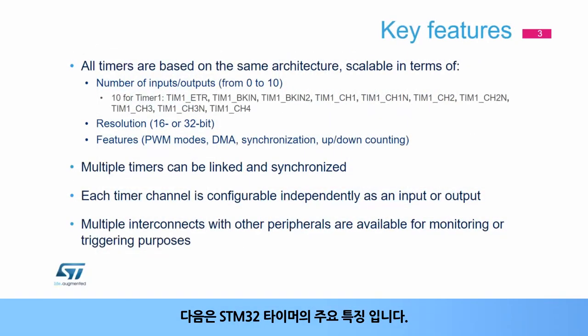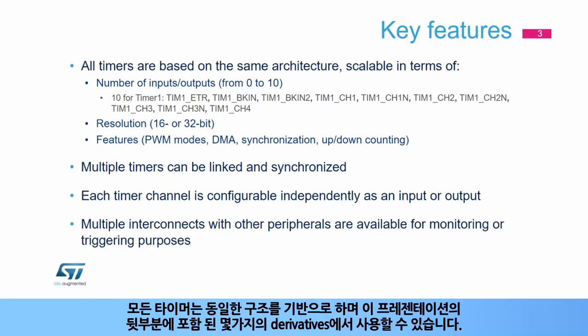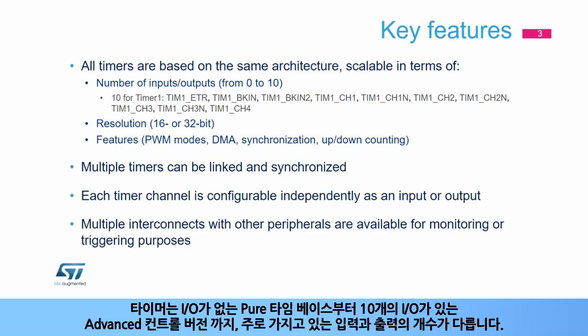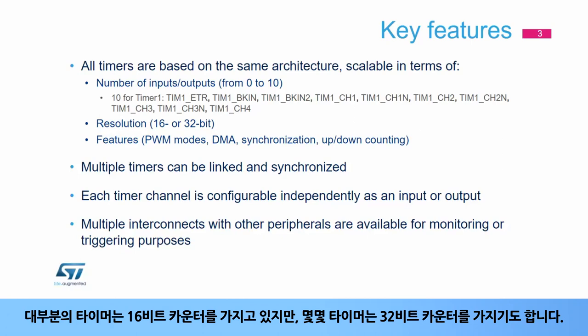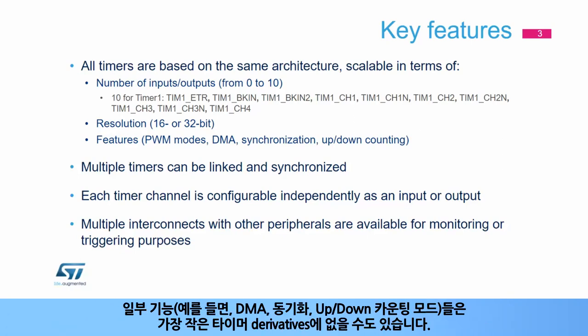Here are the key features of the STM32 timers. All timers are based on the same architecture and are available in several derivatives. The timers mainly differ in the number of inputs and outputs they have, from a pure time base without any IOs to an advanced control version with 10 IOs. Most timers feature 16-bit counters, while some have 32-bit counters. Some features may not be present on the smallest timer derivatives, for example DMA.